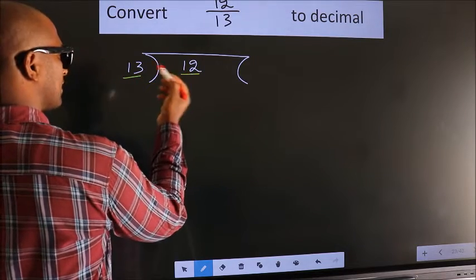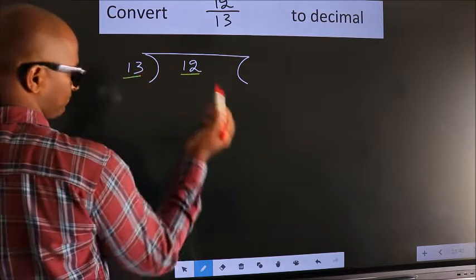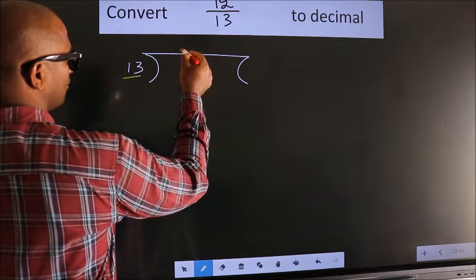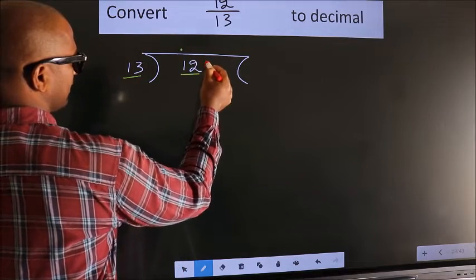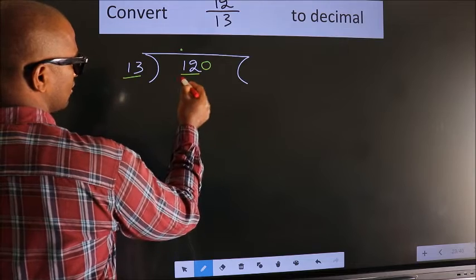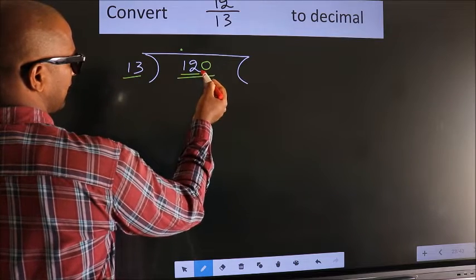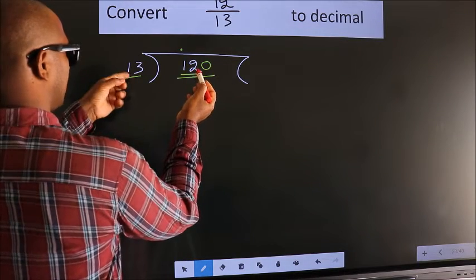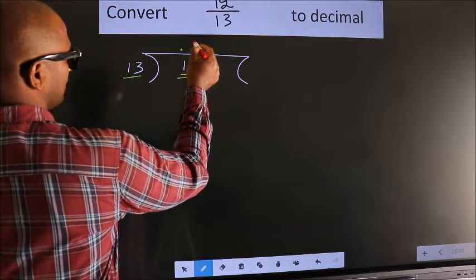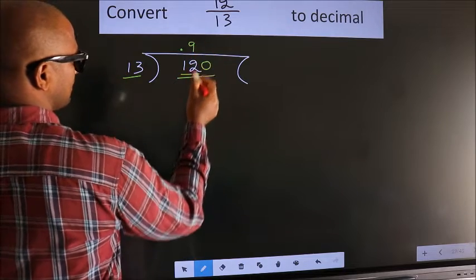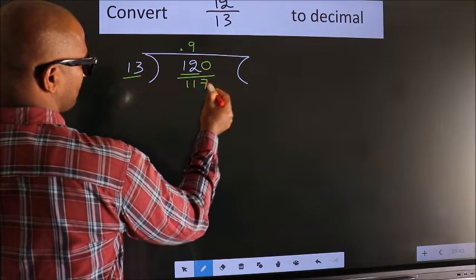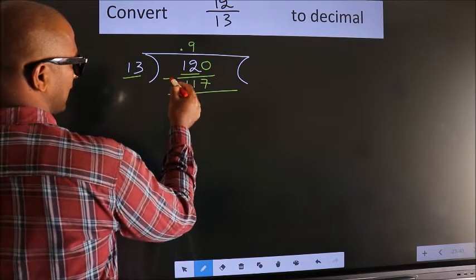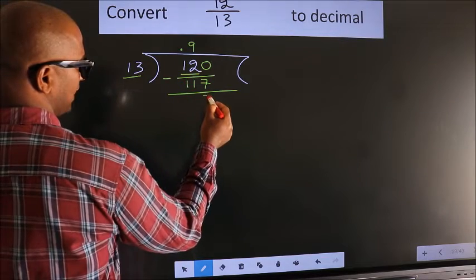12 is smaller than 13. So what we should do is, we should put a dot here and take 0 here. So 120. A number close to 120 in the 13 table is 13 nines, 117. Now we should subtract. We get 3.